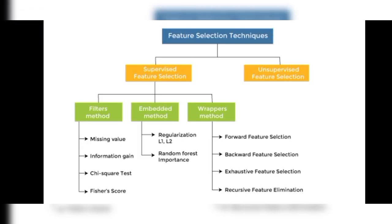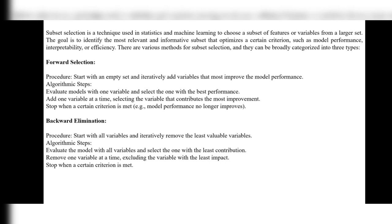In the wrapper method we have forward feature selection and backward feature selection. The first method is forward selection. In forward selection, the procedure starts with an empty set and iteratively adds variables that most improve the model performance. The set starts with no variables at all — it is completely empty — and continuously, one variable at a time, it adds whichever variable improves the model performance. That variable is added to the empty set.